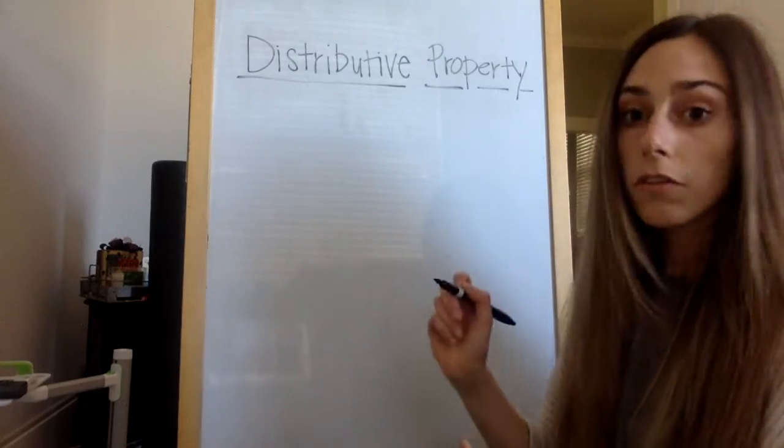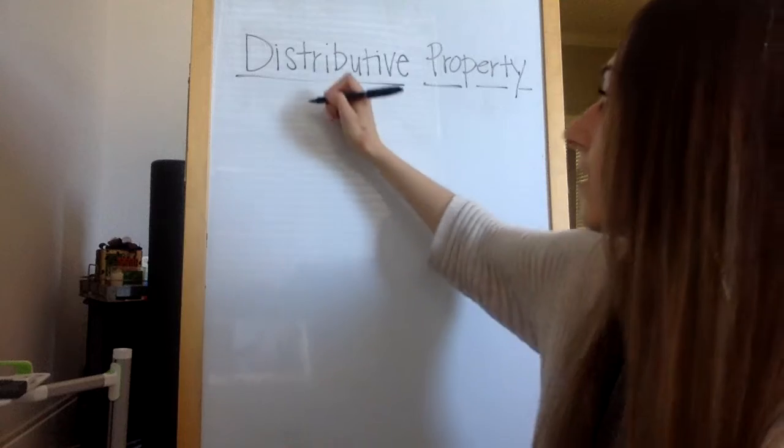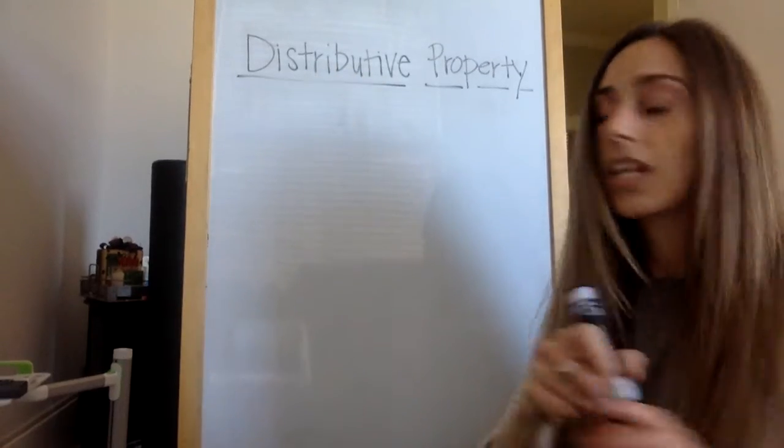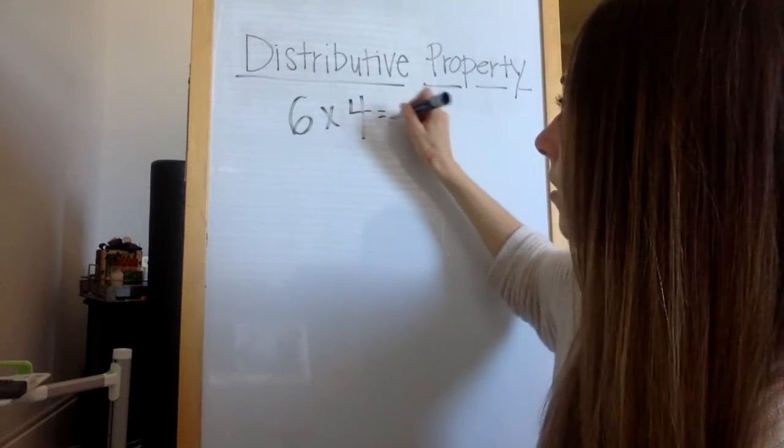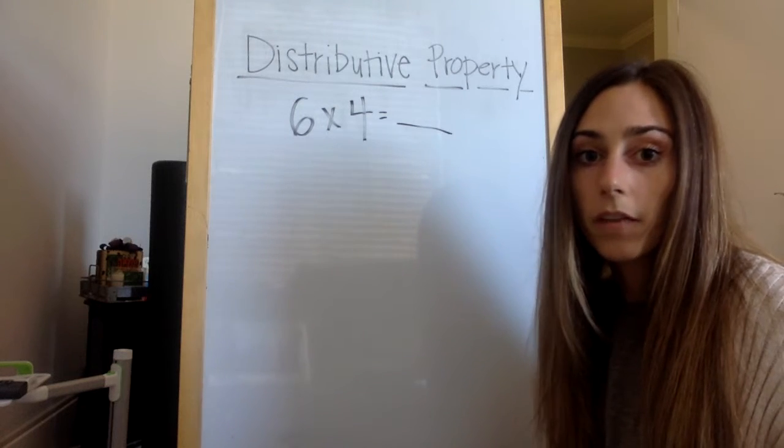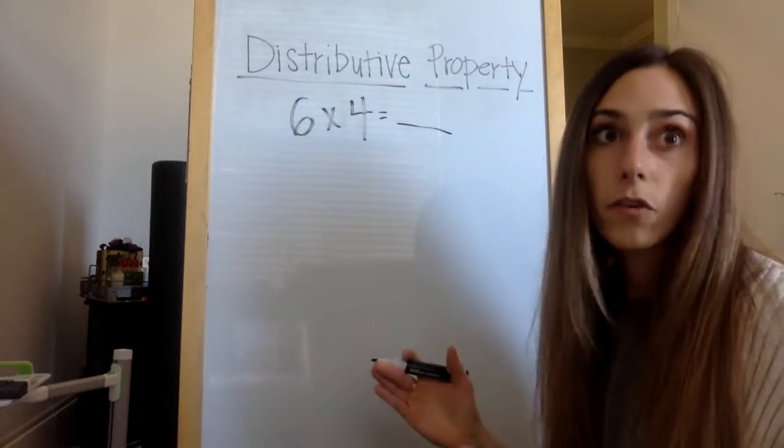Okay, so the first example that I'm going to give you is six times four. I already know that a lot of you know what six times four is right off the bat, but we're going to use the distributive property to show this in a different way.